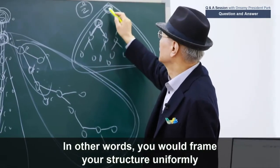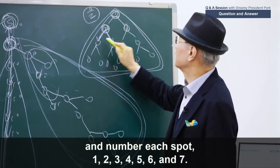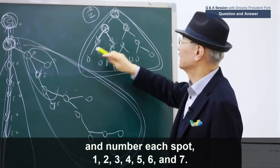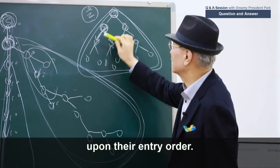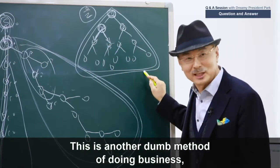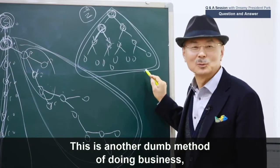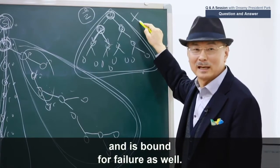That's another common way to completely screw this up. In other words, you would frame your structure uniformly and number each spot 1, 2, 3, 4, 5, 6, and 7. The sponsor would place newcomers in designated spots upon their entry order. This is another really dumb method of doing business. It's just really not that smart. And it's bound for failure as well.